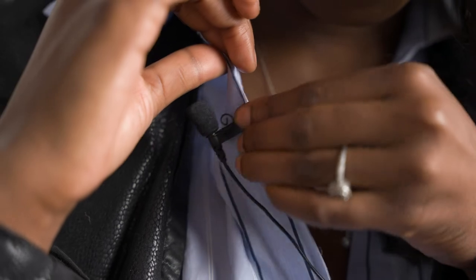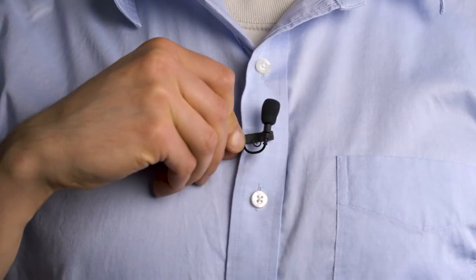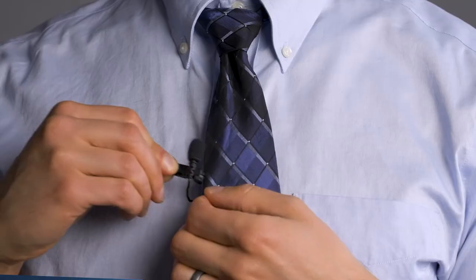It's a personal preference if you want to have the mic showing. Personally, we think it's easier to get better sound when it's above the clothing. If you are okay with it showing, clip the mic onto the shirt, lapel, or tie.